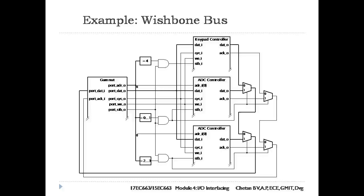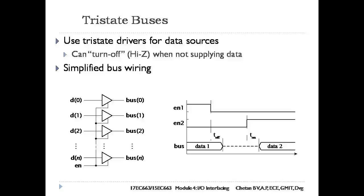Tri-state Buses: The outputs of a tri-state driver can be turned off by placing it in a high-impedance or high-Z state. The symbol for a tri-state driver is shown in the figure. When the enable input is 1, the driver behaves like an ordinary output, driving either a low or high logic level on the output.